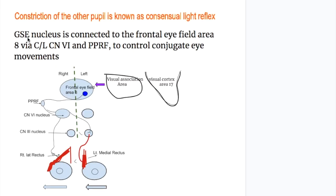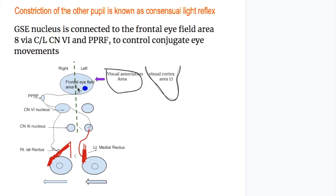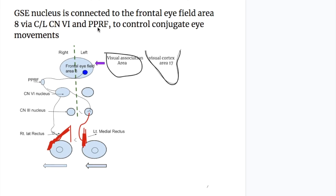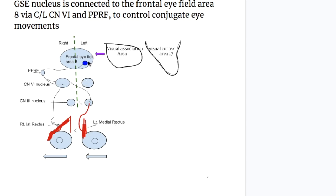The general somatic efferent nucleus is connected to the frontal eye field area 8 via the contralateral sixth nerve and peripontine reticular formation. Area 8 is connected to the contralateral reticular formation, which is then connected to the nucleus of the abducent nerve. The abducent nerve supplies the lateral rectus muscle on the same side and, via the medial longitudinal fasciculus, connects to the nucleus of the third cranial nerve — the oculomotor nerve — which supplies the medial rectus muscle. This is concerned with horizontal gaze of the eyes.